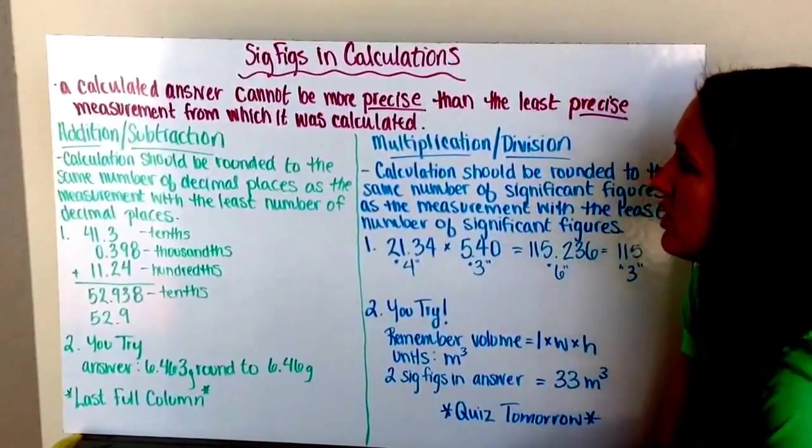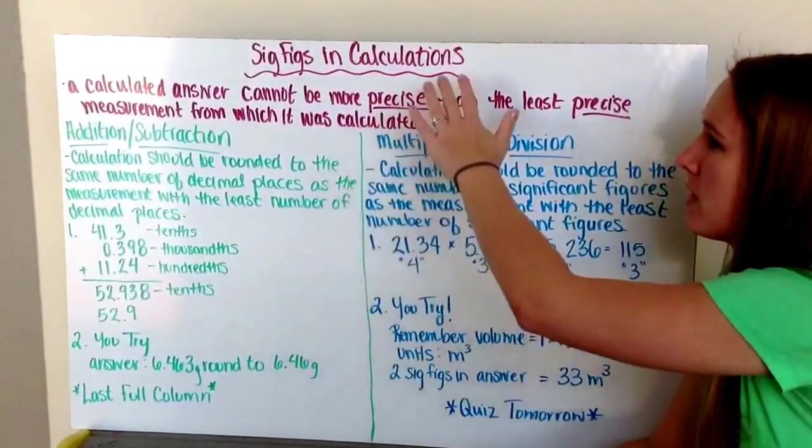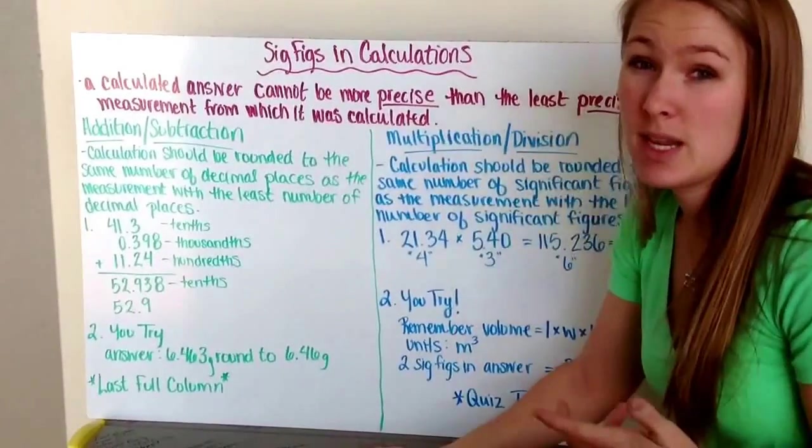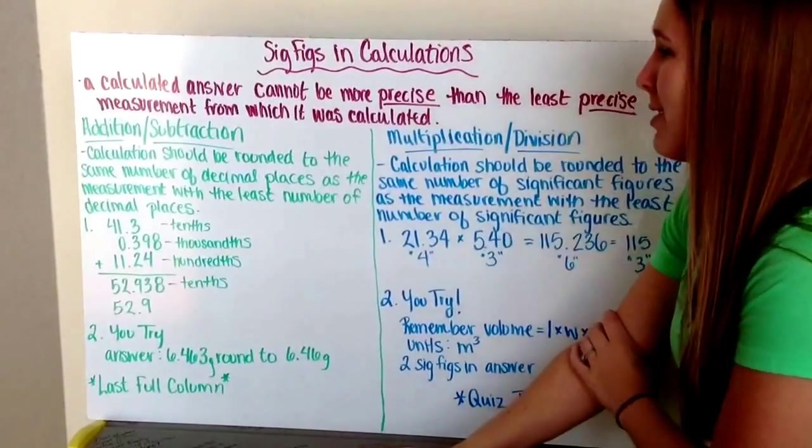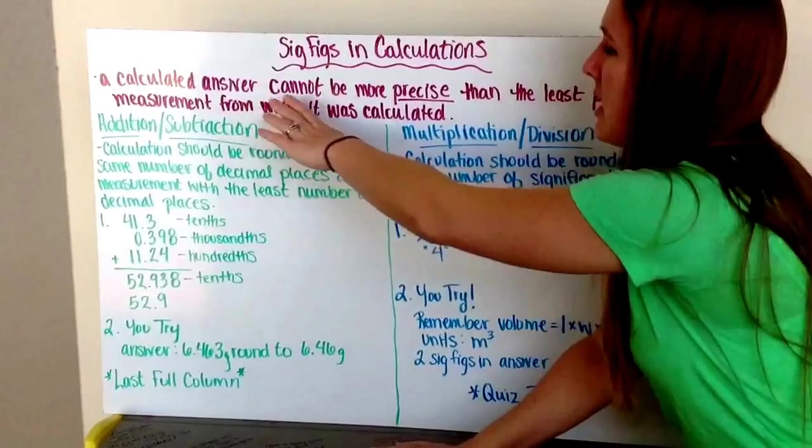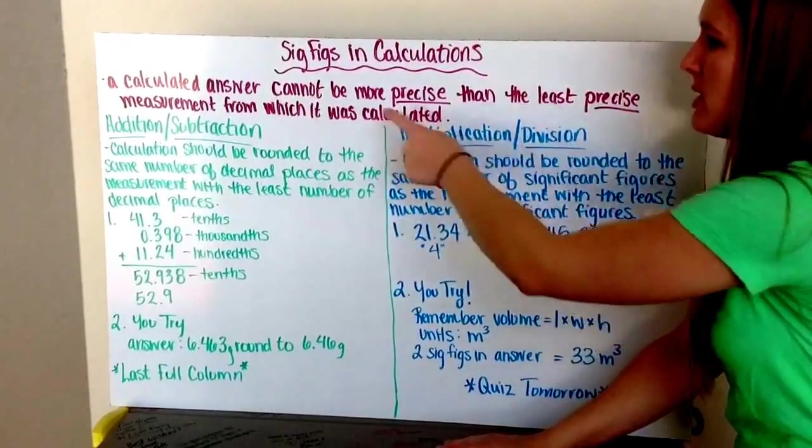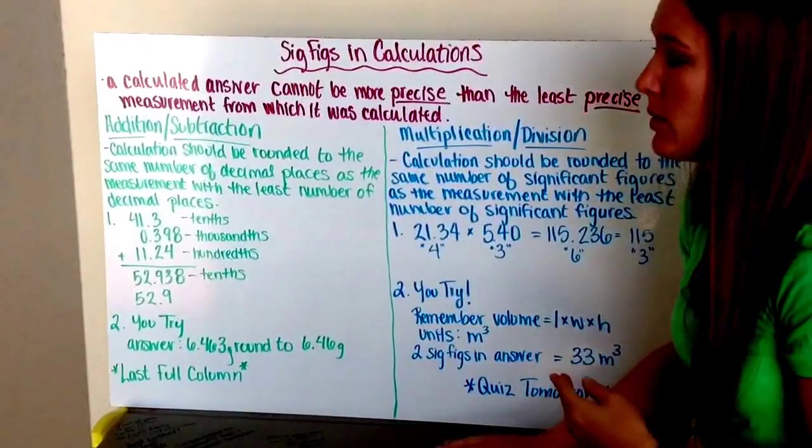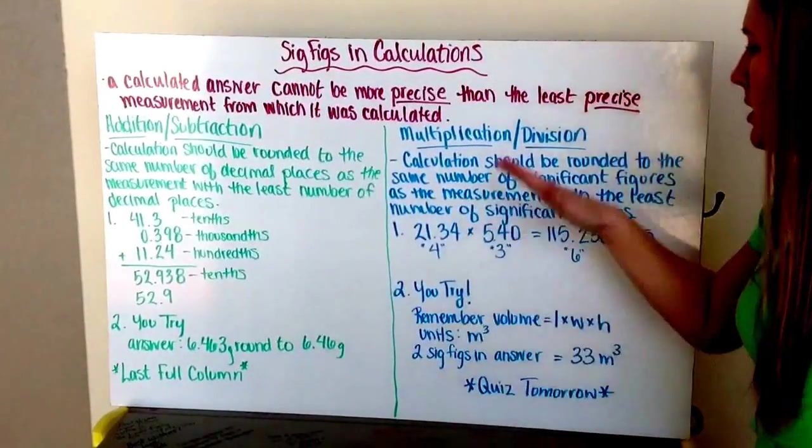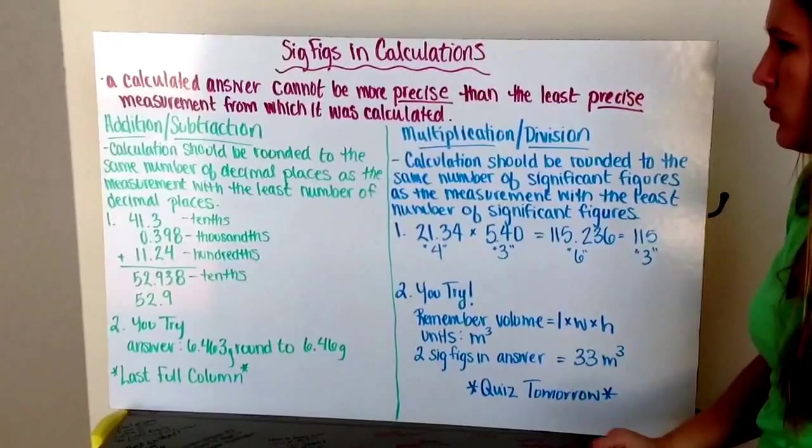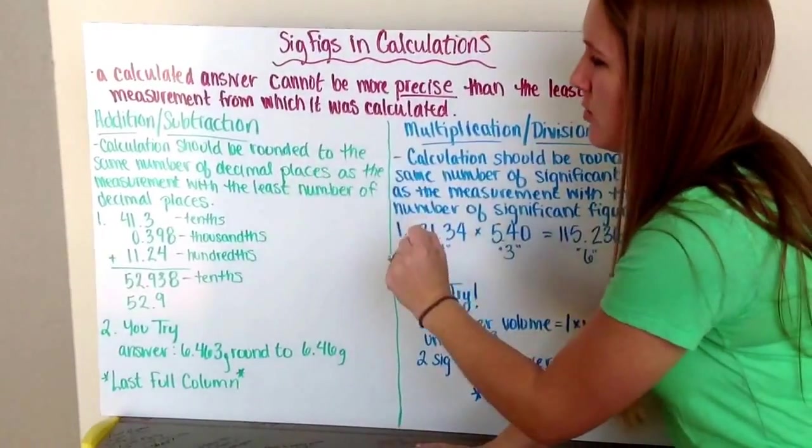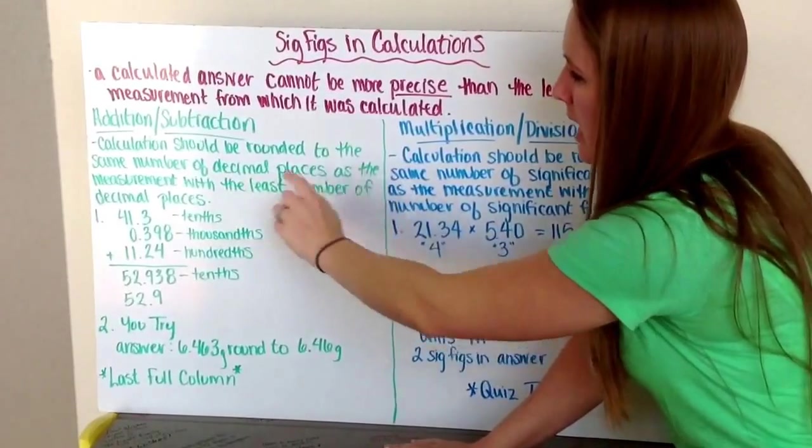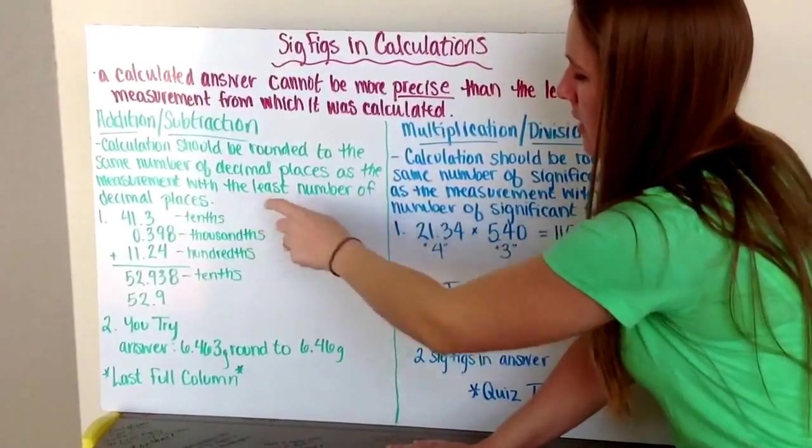Now let's get into our calculations. Significant figures in calculations help us tell our information to our audience precisely how precise we can have our numbers be. A calculated answer cannot be more precise than the least precise measurement from which it was calculated. There's our addition and subtraction rules, and then there's our multiplication and division rules.